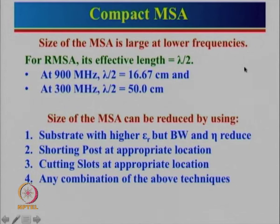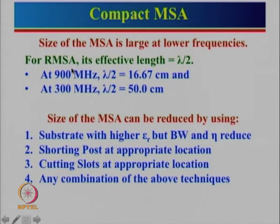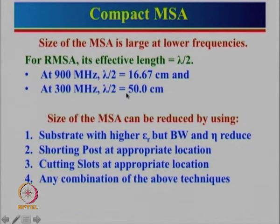The size of the microstrip antenna is large at lower frequency. For example, for RMSA the effective length should be equal to lambda by 2. If we take an example of 900 MHz, which falls under the category of GSM 900, then lambda by 2 is equal to 16.6 centimeters. And if we have to design an antenna at 300 MHz, then lambda by 2 is 50 centimeters.